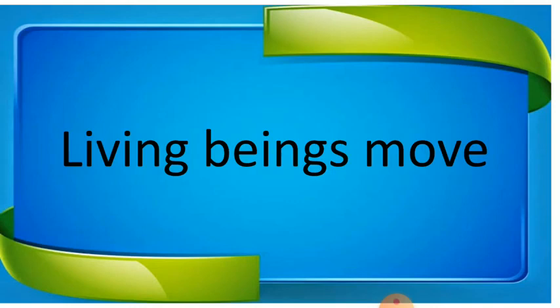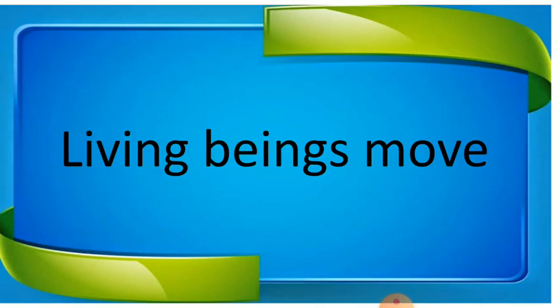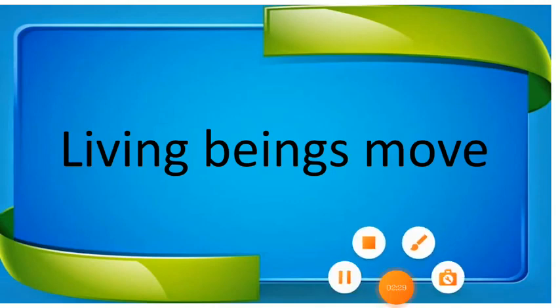Living beings need food — in that we learned two important points: autotrophs and heterotrophs. Autotrophs are organisms that can manufacture their own food, like plants. Heterotrophs are organisms that depend on other organisms for food. Next, we learned about excretion — the throwing out of waste from our body. We learned that responding to stimuli is called sensitivity. And we learned about respiration: taking in oxygen and giving out carbon dioxide, with energy released during this process.